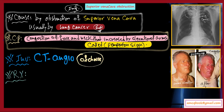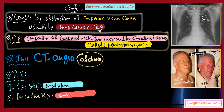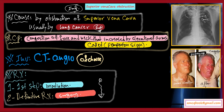For investigation, the investigation of choice is CT angiography. For treatment, the first step is radiation in order to decrease the size of the tumor and decrease the obstruction. The definitive treatment is surgery. Always start with radiation, then surgery as the definitive treatment — keep this in mind.